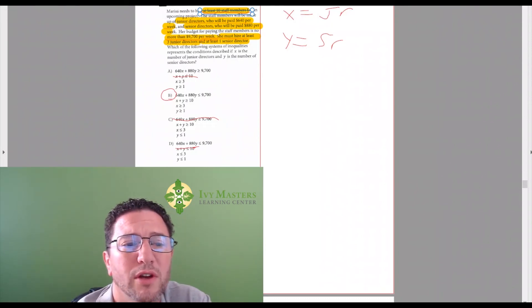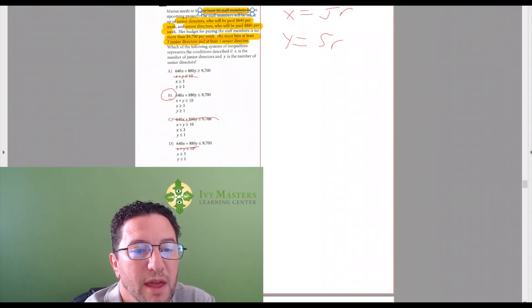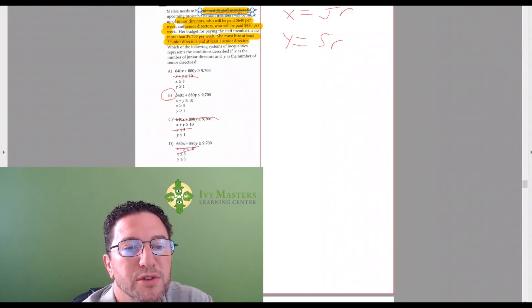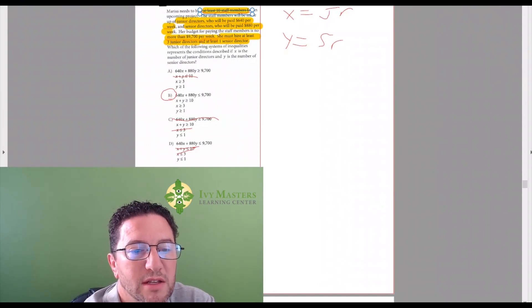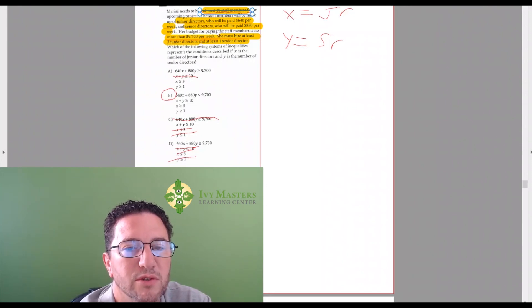And then you could also look at other pieces, which is she must hire at least three junior directors. If you, let's say you didn't understand the 640X plus 880Y is less than or equal to 9,700, but you did understand she must hire at least three junior directors. Based on that, you could eliminate answer choice C and D. And let's say you understood she must hire at least one senior director. Then it's got to be greater than or equal to one, not less than or equal to one. So those would be gone for that reason as well.